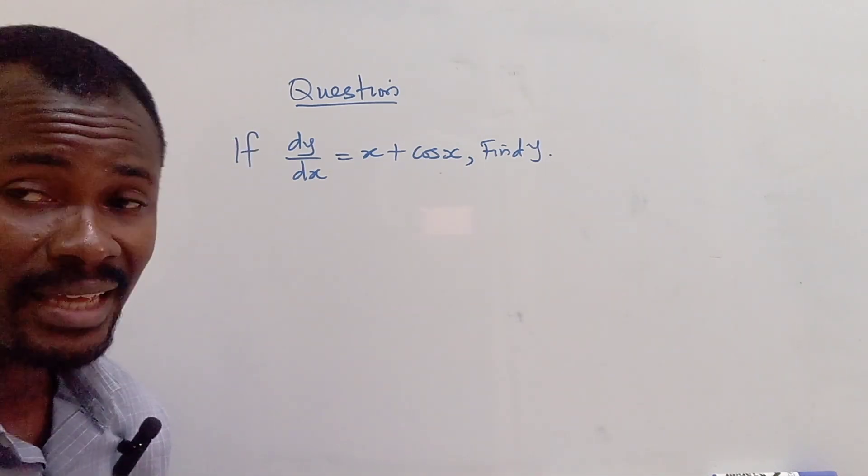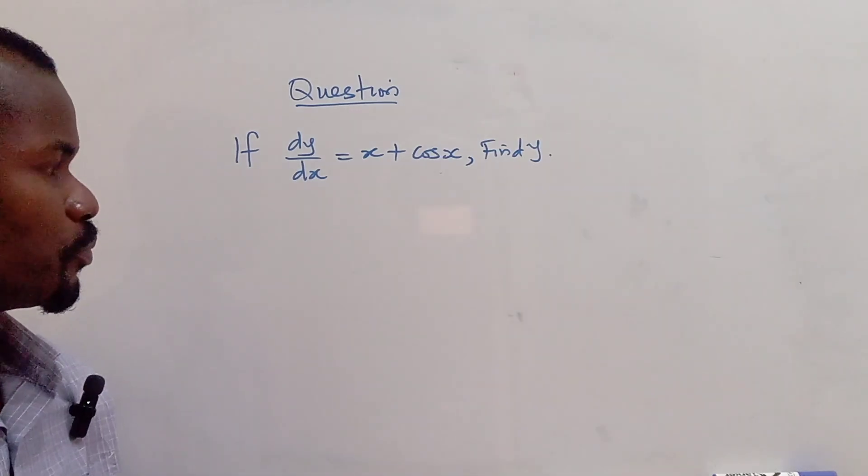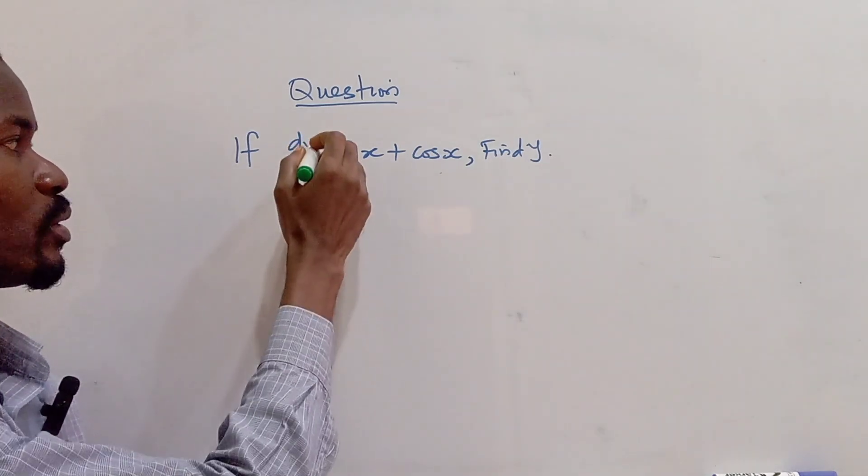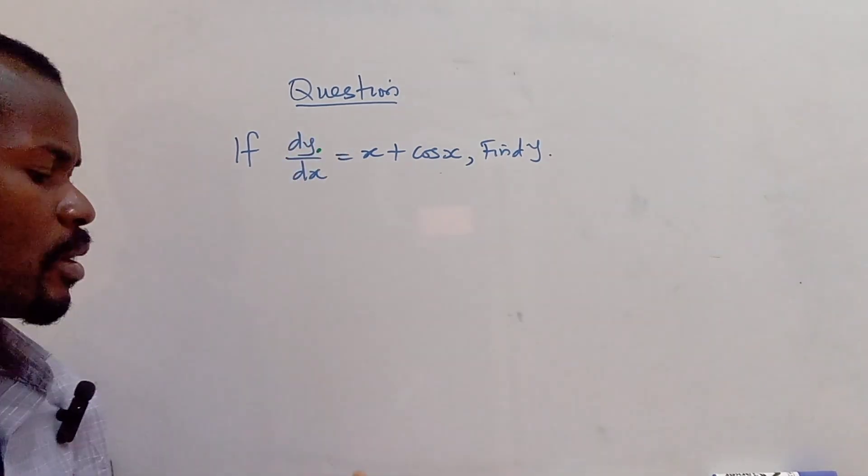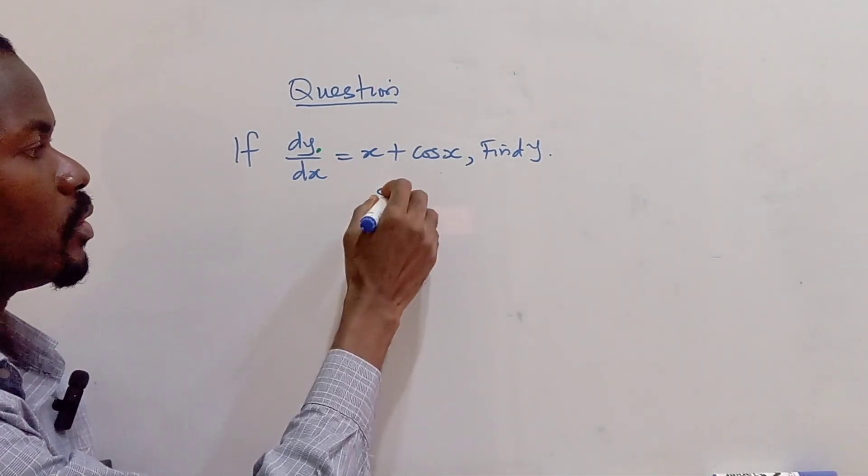It says if dy/dx is x plus cos x, find y. All right, so now what we want to do in this problem is we want to find y, this y. But we have dy/dx. So what do we do?